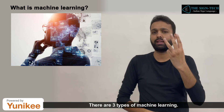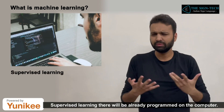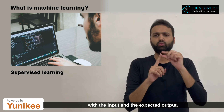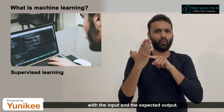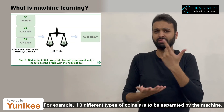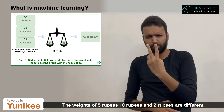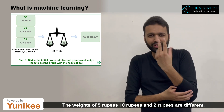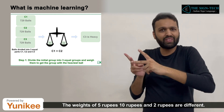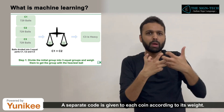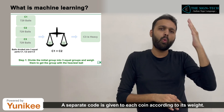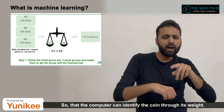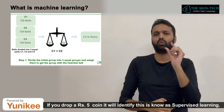There are three types of Machine Learning. In Supervised Learning, the computer is already programmed with the input and the expected output. For example, if three different types of coins are to be separated by the machine — the weights of 5 rupees, 10 rupees, and 2 rupees are different. A separate code is given to each coin according to its weight, so that the computer can identify the coin through its weight. If you drop a 5 rupee coin, it will identify it — this is known as Supervised Learning.